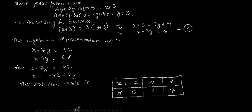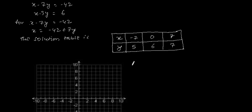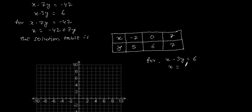Now for the second representation, let's make the solution table. For x minus 3y equals 6, this becomes x equals 6 plus 3y.